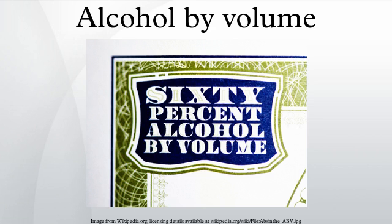Alcohol by volume is a standard measure of how much alcohol is contained in an alcoholic beverage. It is defined as the number of milliliters of pure ethanol present in 100 milliliters of solution at 20 degrees Celsius. The number of milliliters of pure ethanol is the mass of the ethanol divided by its density at 20 degrees Celsius, which is 0.78924 g per milliliter.